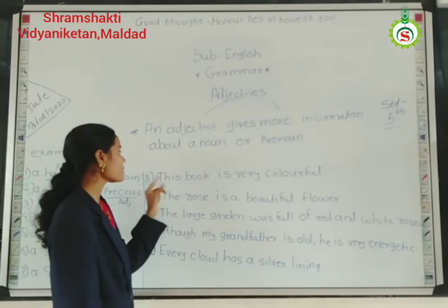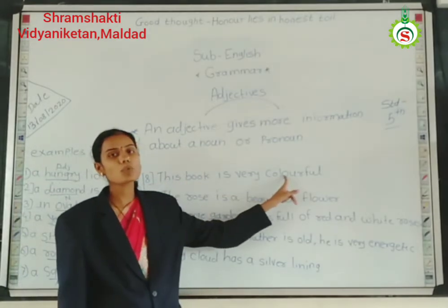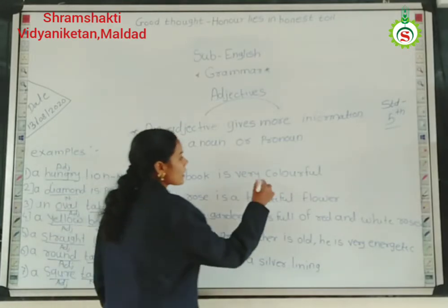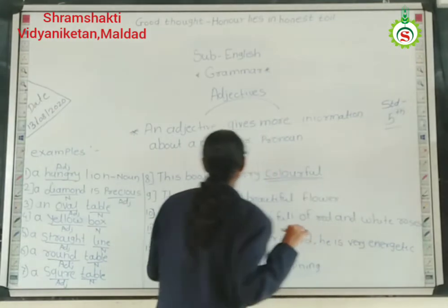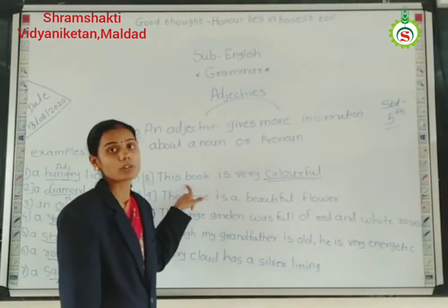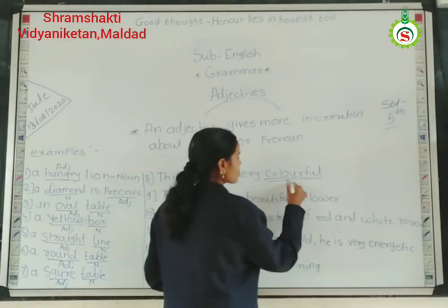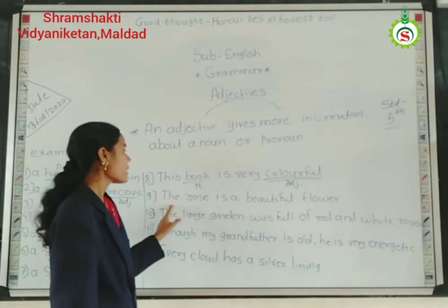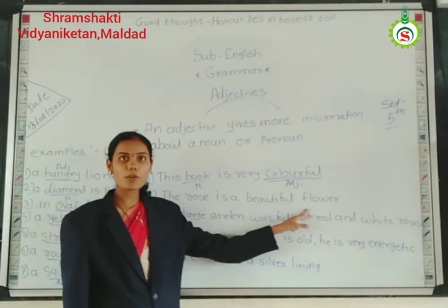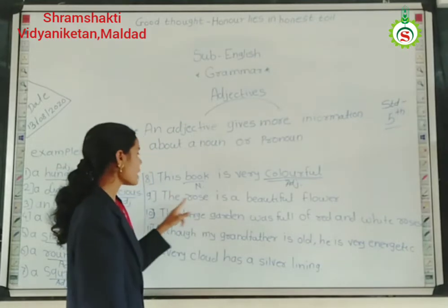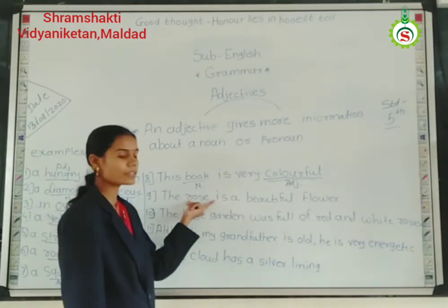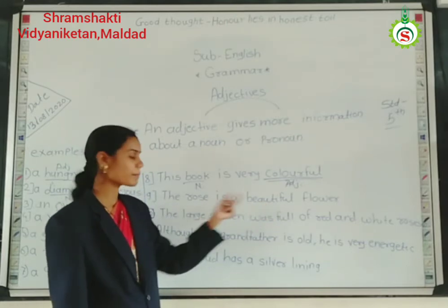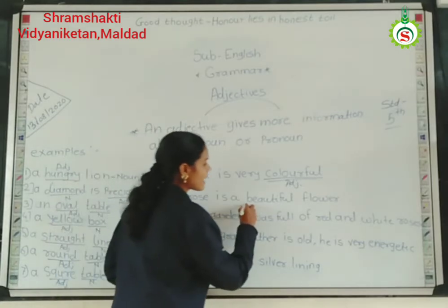The next example is: 'This book is very colorful.' In this sentence, which is the adjective? Colorful. The word colorful gives more information about book, so colorful is adjective and book is noun. Then, 'The rose is a beautiful flower.' In this sentence, rose is a noun, and beautiful gives more information about rose, so beautiful is the adjective.